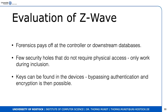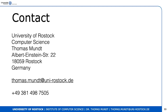Forensics pays off at the controller or downstream databases — if you want to know what's going on in the network, hack the controller. A few security holes not requiring physical access have been found, all working during the inclusion process by manipulating or interfering with messages. Keys can also be found in devices: stealing a device allows reading out the cryptographic material. That's it for today — thank you very much for listening, and I'll be available for discussion. See you next time.